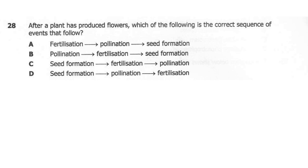Question 28. After a plant has produced flowers, which of the following is the correct sequence of events? A: fertilization to pollination to seed formation. B: pollination to fertilization to seed formation. C: seed formation to fertilization to pollination. D: seed formation to pollination to fertilization. The correct answer here is B. Pollination takes place where pollen is transferred from the anther to the stigma. Then the pollen tube germinates, fertilization takes place in the ovule, then the ovule forms seeds while the ovary becomes the fruit.